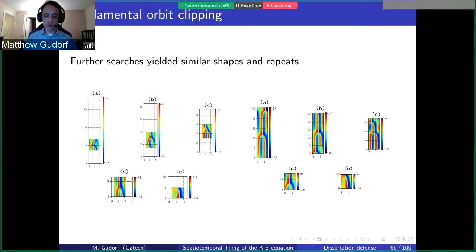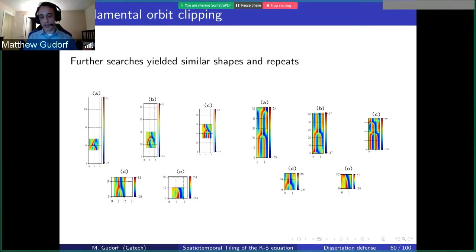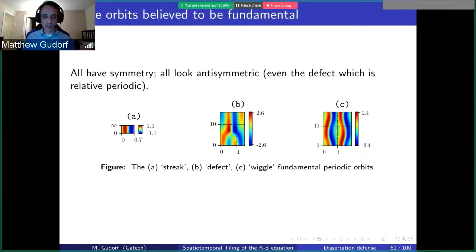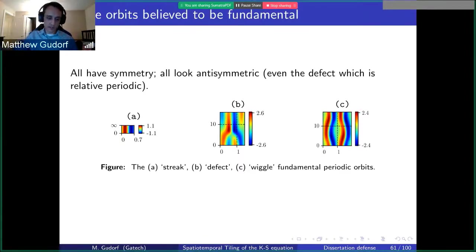We've gone from an infinite space-time of arbitrarily complex patterns and shapes to three shapes, which I'm going to claim are the building blocks of turbulence. All three have interesting properties where they all look somewhat anti-symmetric. A and C are actually inside the anti-symmetric invariant subspace mentioned earlier. B is a relative periodic solution which, when presented in the physical frame rather than the co-moving frame, also looks anti-symmetric.